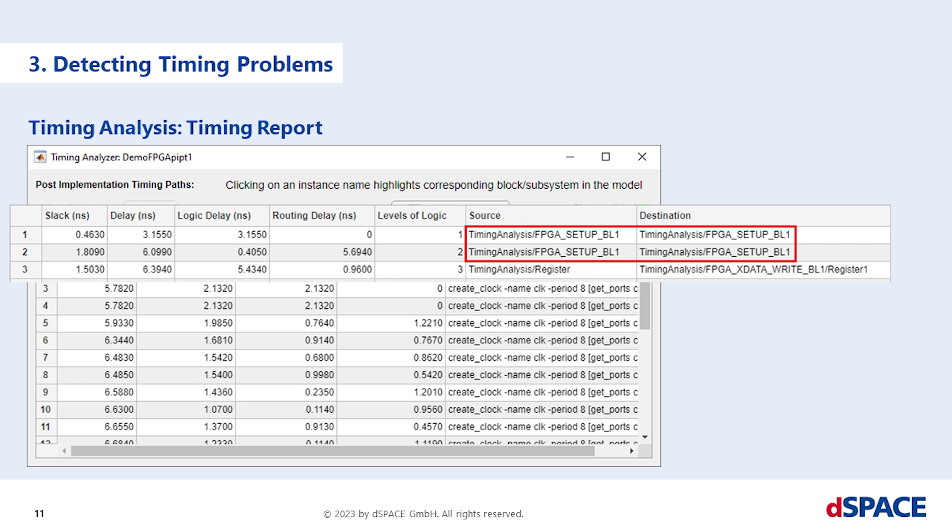If the source and destination block is FPGA setup block in the timing report, the path is in the dSPACE framework. Paths with little slack can be located there. However, the framework should not generate timing errors with slack below zero at below 70% of FPGA utilization.